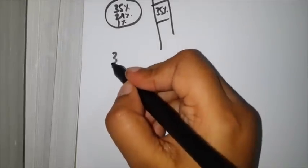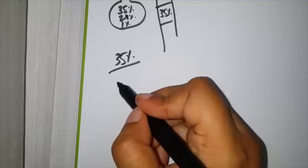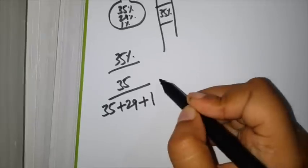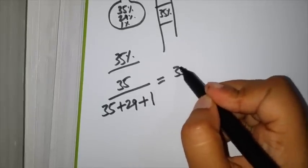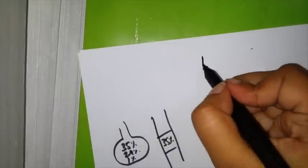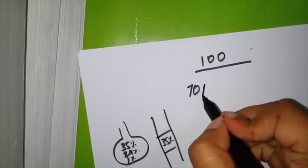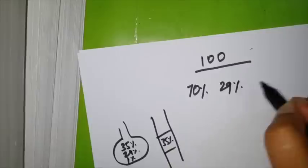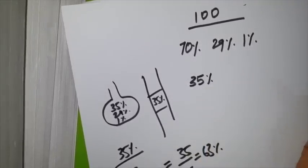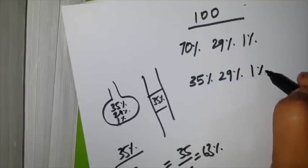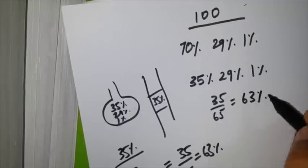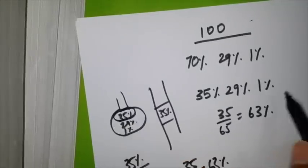Now it has become 35%, right? This 35% is actually 35 out of 35 plus 29 plus 1, so that will be 35 by 65, that is 63%. Initially out of 100 it was 70% nitrous oxide, 29% oxygen, and 1% halothane. But by the time 35% of nitrous oxide has diffused, 29% oxygen and 1% halothane have not yet diffused.